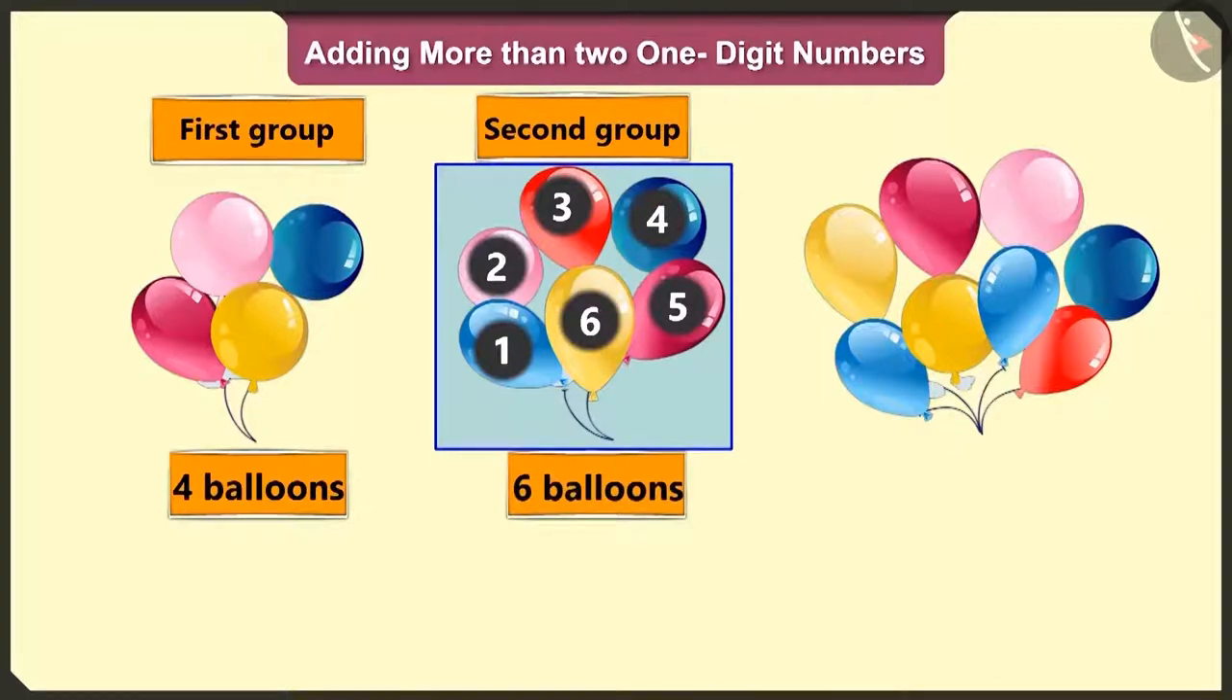Can you tell me how many balloons are there in each group? In the first group, one, two, three and four balloons. In the second group, one, two, three, four, five and six balloons. And in the third group, there are one, two, three, four, five, six, seven and eight balloons.